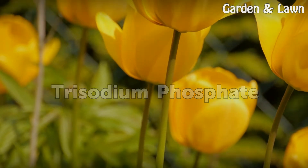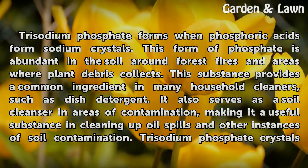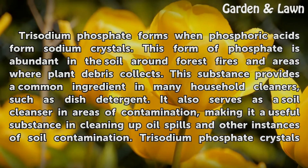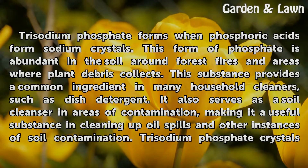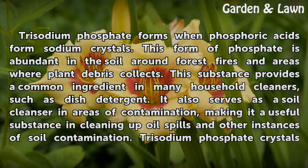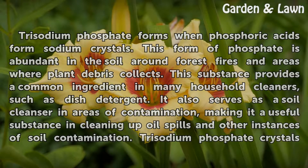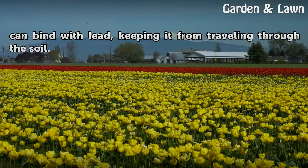Trisodium Phosphate forms when phosphoric acids form sodium crystals. This form of phosphate is abundant in the soil around forest fires and areas where plant debris collects. This substance provides a common ingredient in many household cleaners, such as dish detergent. It also serves as a soil cleanser in areas of contamination, making it a useful substance in cleaning up oil spills and other instances of soil contamination. Trisodium Phosphate crystals can bind with lead, keeping it from traveling through the soil.